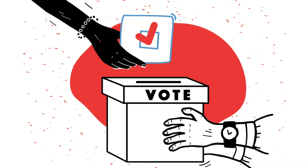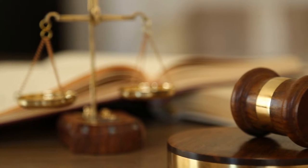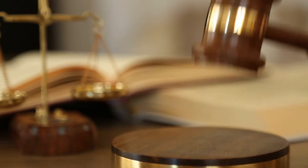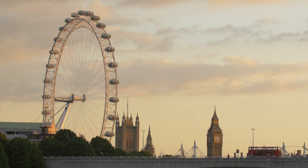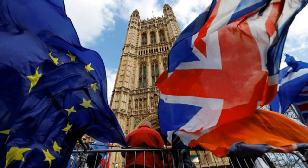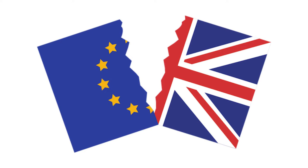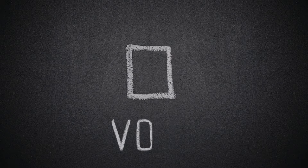Direct democracy at the national level is usually seen through initiative and popular referendums, where people get to vote directly on a law, bill, issue, or change, with specific criteria for it to be passed or become binding. The most popular recent example would be Brexit — citizens in Britain got to vote on the United Kingdom staying with or leaving the European Union. The majority voted to leave.